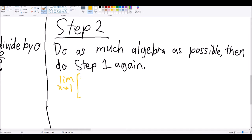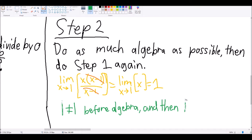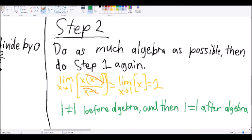For example, if you have x-1s in the numerator and denominator, cancel them out. Then try step 1 again with this modified function. And here, we're saying approaching is not the same as equaling, and then after the algebra, saying that approaching is the same as equaling. Sneaky sneaky.